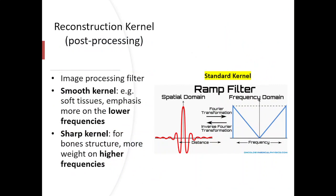Finally, the reconstruction kernel. Reconstruction kernels apply filters to enhance different structures in the image. A smooth kernel is used for soft tissues, while a sharp kernel enhances edges, making it ideal for bone scans. Most CT reconstructions use a standard kernel, which is equivalent to a ramp filter in filtered back projection reconstruction. Adjustments to enhance either the low or high frequencies can refine image details. The ramp filter in the frequency domain has higher weight on higher frequencies, and by adjusting its shape, it can correspond to a smoother or sharper kernel.